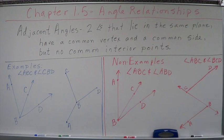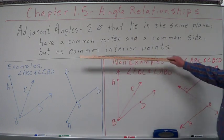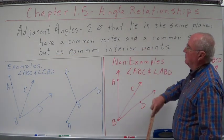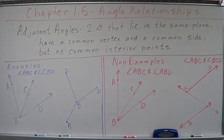They have to share a side. It's like your adjacent neighbor shares a fence with you. A common side is going to be a fence that those two angles share with each other. But they have no common interior points. We'll get into that as a non-example. One more time. Adjacent angles. Two angles that lie in the same plane, have a common vertex and a common side, but no common interior points.